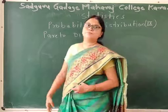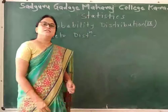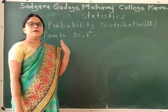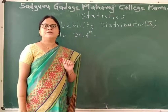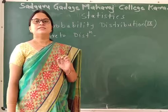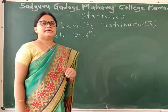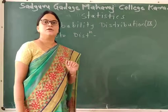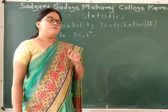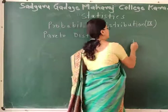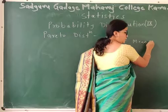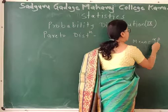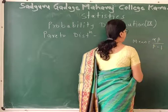Good morning. In the series of chapters of BAC 3rd year, probability distribution, this is the second lecture of Pareto distribution. In the first lecture, we saw what is mean. The mean of Pareto distribution is alpha beta divided by beta minus 1.